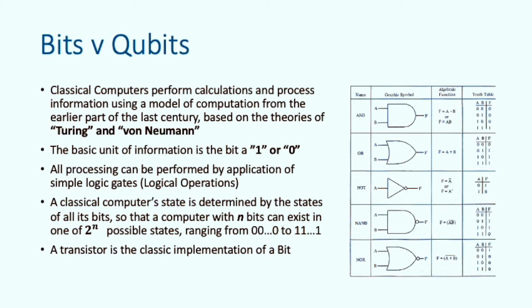A classical computer's state is determined by the state of all its bits. So that a computer with n bits can exist in one of 2 to the power of n possible states. So for n equals 3, we can have 8 possible states from 0, 0, 0, 1, 0, 1, 0, 0 and so on up to 1, 1, 1. But the important thing is that we can only be in one of these possible 8 states at any one time.